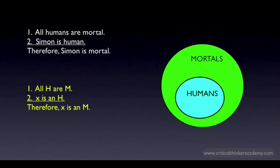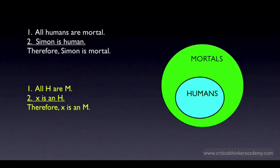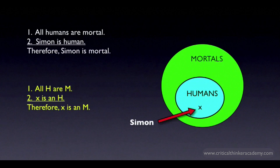Now, what does that small x represent in 'x is an H'? Well, it represents an individual human being — Simon. In categorical logic, you use capital letters to represent categories or classes of things, and you use lowercase letters to represent individual members of any particular category. On a diagram like this, you'd normally use a little x to represent Simon. So putting the x for Simon inside the category of humans is a way of representing the whole proposition, 'Simon is human.'